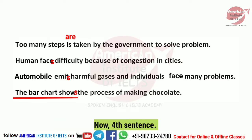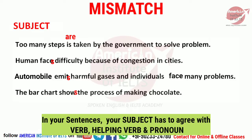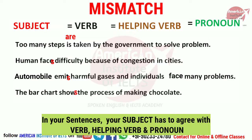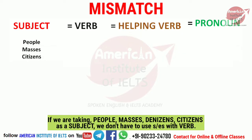Let me tell you what this is called — this is called a mismatch. In your sentences, your subject must agree with the verb, helping verb, and pronoun. If in essay writing you are talking about 'people', 'masses', 'citizens', or 'denizens', then you do not need to add 's' to the verb at all.